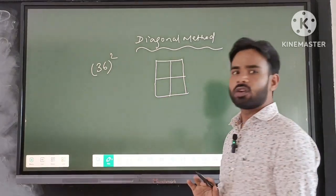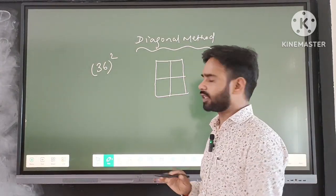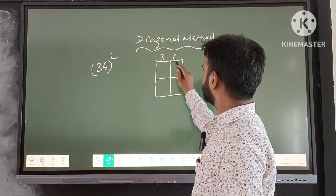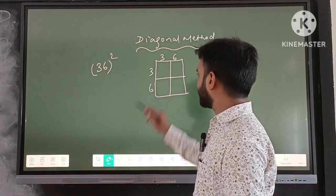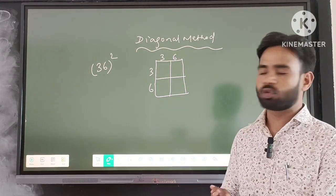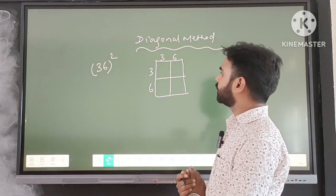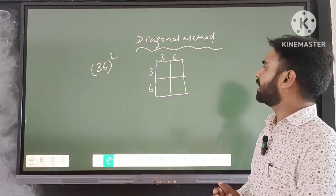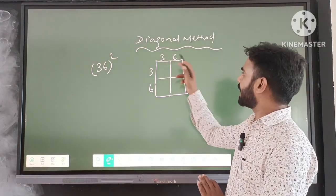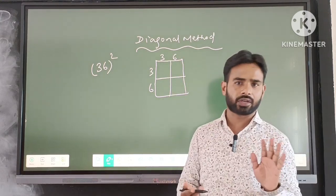We have drawn the 2×2 matrix. Now we write 36 both horizontally and vertically along the matrix. Before multiplying, we join all the diagonals — this is the diagonal method, so it is important to draw the diagonals first.